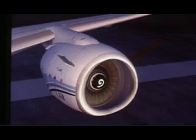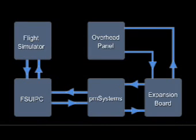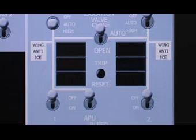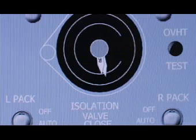As this engine speeds up, I'll just quickly go over the process of how PM Systems is handling this. First, the physical start switch was turned by me in the simulator on the overhead panel. This input is sent by the expansion board, and then PM Systems sends the input via FSUIPC to the flight simulator, which in turn starts the engine starter motor. Within the bounds of PM Systems, this would be entirely dependent on the other systems being selected first, like either ground air or air selected from the APU to the engine.